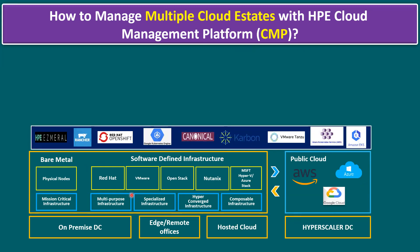Nowadays, most infrastructure and application definitions have changed — applications are moving from monolithic to tier-based, and then to microservices architecture, meaning all applications are containerized. Within containerization we have multiple Kubernetes clusters. HPE has its own enterprise Kubernetes product called HPE Ezmeral; other options include SUSE Rancher and Red Hat OpenShift — all are enterprise-grade Kubernetes products, not open source.